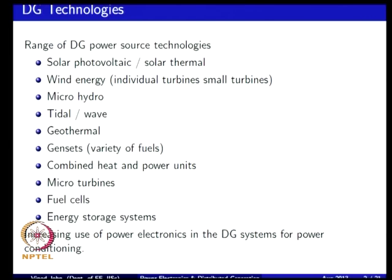If you look at the DG technologies out there, quite prominent among them is solar electric generation — both photovoltaic and solar thermal — and it is one of the fastest growing electric generation methods today, although from a smaller base. Comparatively, wind energy is relatively mature, but at a distribution scale you are talking about individual or small turbines. Micro hydro is also getting a closer look. Then you have tidal generation, wave energy generation, and geothermal energy systems in locations where geothermal energy is available.